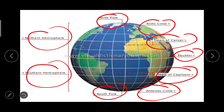Which continents are spread in all the four hemispheres? Not a single continent is spread in all the four hemispheres. At which two parallels do all the meridians converge? All the meridians converge at the North Pole and South Pole, as you can see here.